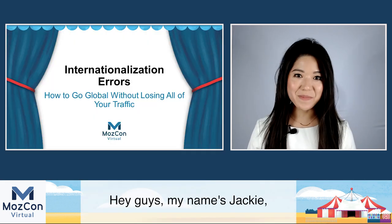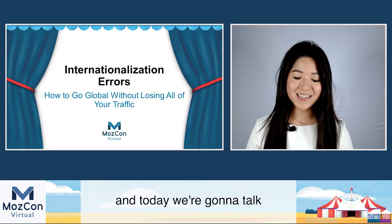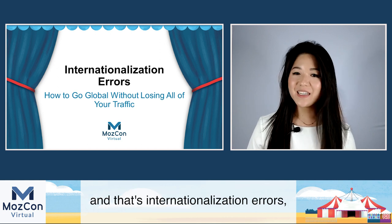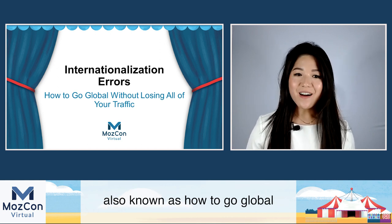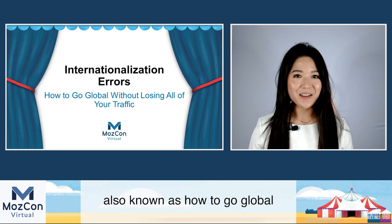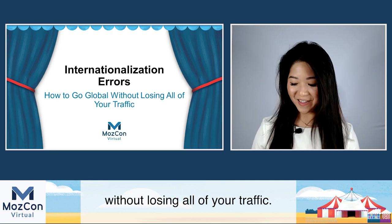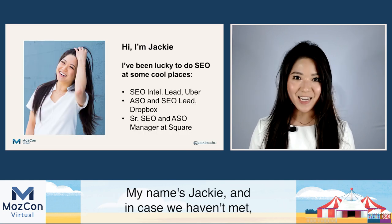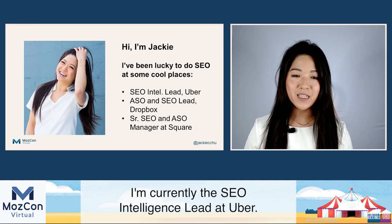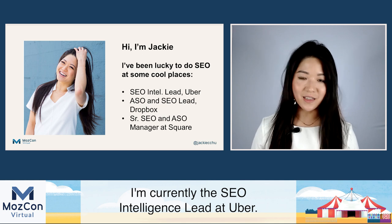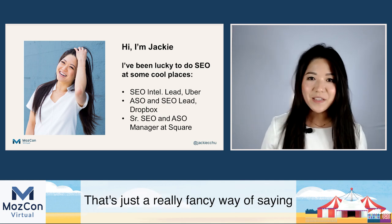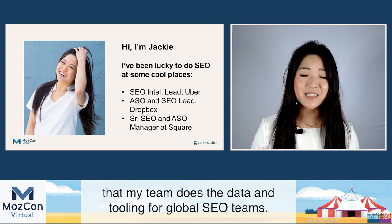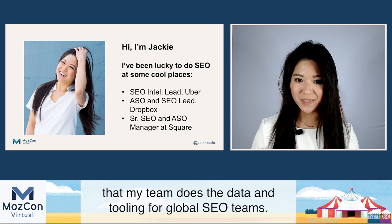My name's Jackie, and today we're going to talk about my favorite thing: Big Sites Screw Up — and that's internationalization errors, also known as how to go global without losing all of your traffic. I'm currently the SEO intelligence lead at Uber. That's just a really fancy way of saying that my team does the data and tooling for global SEO teams.